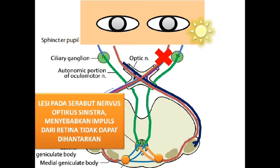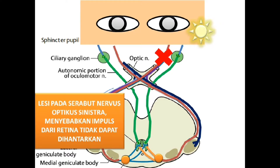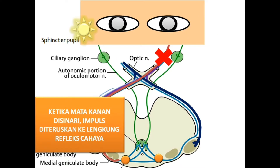Lesi pada serabut nervus optikus sinistra menyebabkan impuls dari retina tidak dapat dihantarkan. Ketika mata kanan disinari, impuls diteruskan ke lengkung refleks cahaya secara normal.